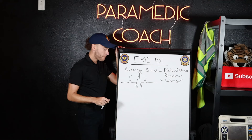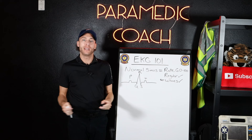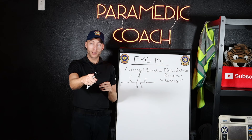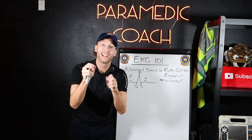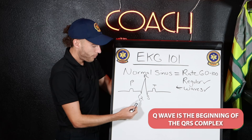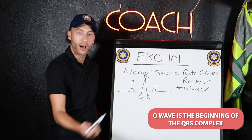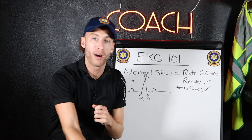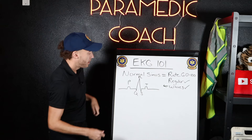The P wave — what does that represent? It means the atria, the top of the heart — the atria is the top, the ventricles are the bottom — the atria are firing. The medical word is they're depolarizing in the electrical activity, and what's happening is we get the P wave. The next wave is the Q wave. The Q wave is the beginning of the QRS complex. This QRS complex represents the ventricles — the bottom of the heart — the ventricles depolarizing, firing, going off.